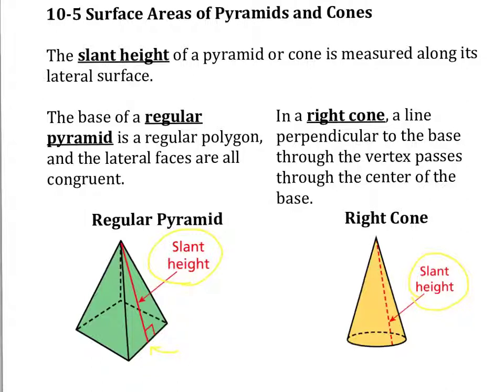Okay, so the base of a regular pyramid is a regular polygon, and the lateral faces are all congruent. So that means the measurements of all the sides of the base of the pyramid are the same dimension.